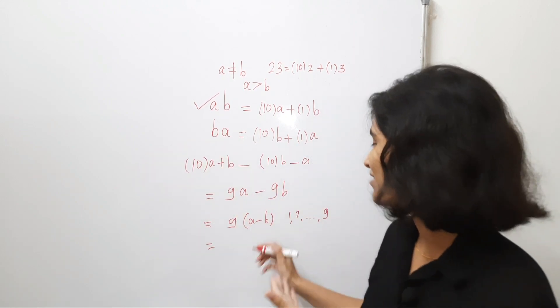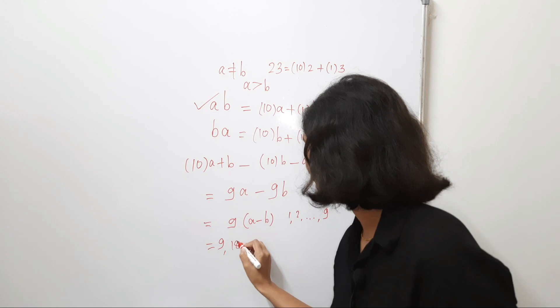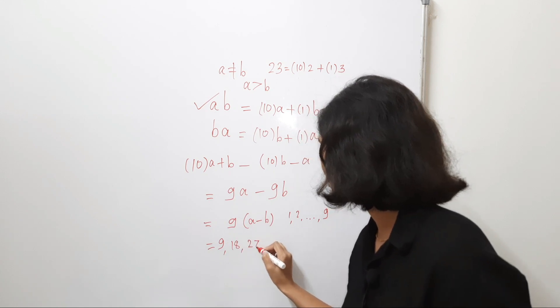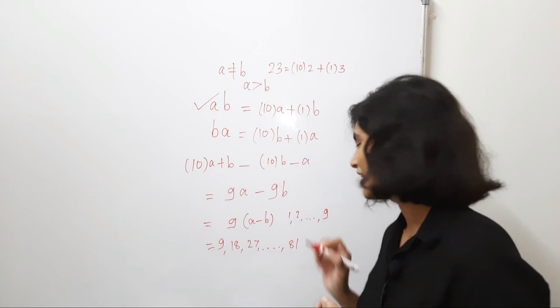That means this list is just 9, 18 and 27 and so on up to 81, right?